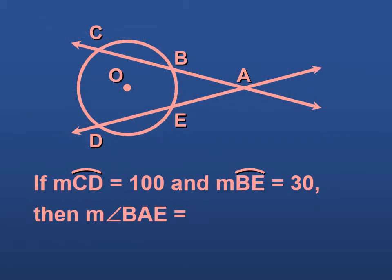And they're intersecting here at point A on the outside of the circle. And this angle right here is going to be one half, one half of the difference of these two arcs, the intercepted arcs. So the measure of angle BAE is going to be one half of 100 minus 30. So 100 minus 30 is 70, and then half of 70 would be 35.